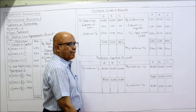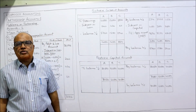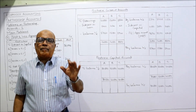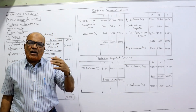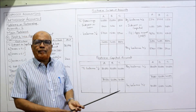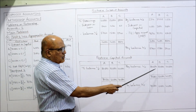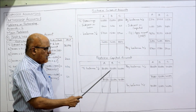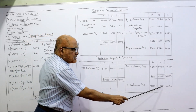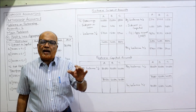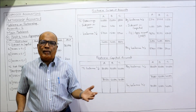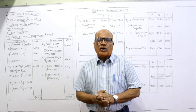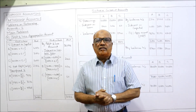The capital accounts remain fixed. Partners are maintaining the fixed capital method, where all adjustments are done in the current account. Simply take the balance: at the beginning of the year, balances are 80,000, 60,000, 40,000. Balance carried down: 80, 60, 40. Brought down balance: 80, 60, 40. The beginning and end of year balances in the capital account remain the same. This is the end of problem number four. We'll continue with problem number five in the next video.